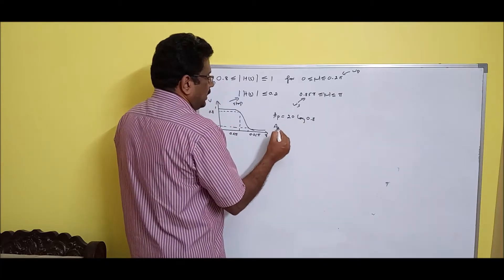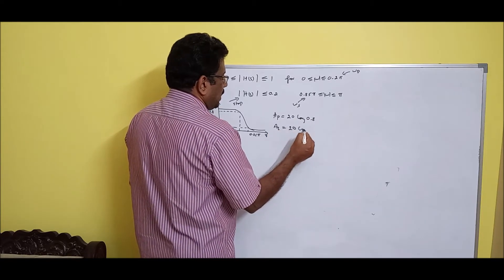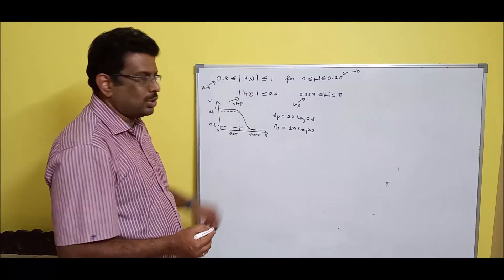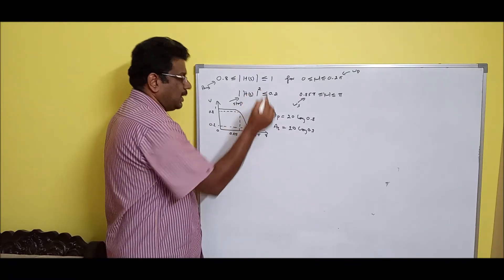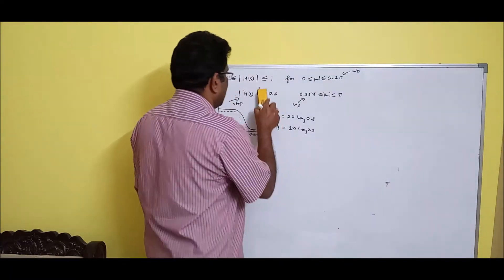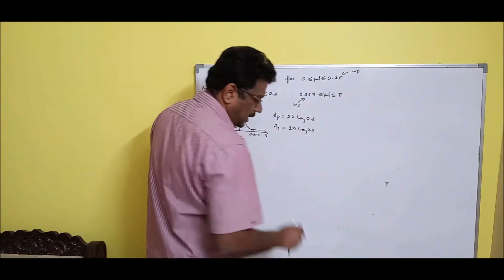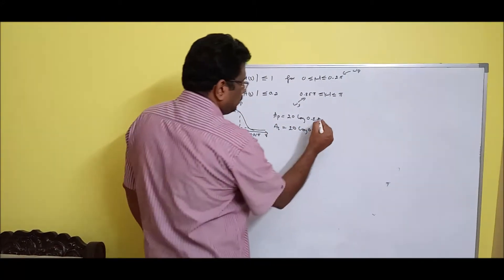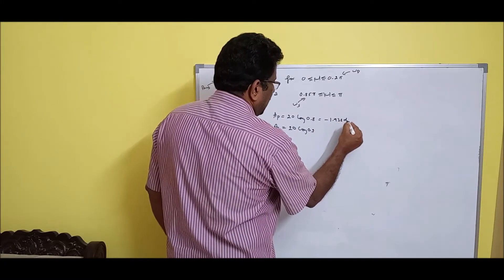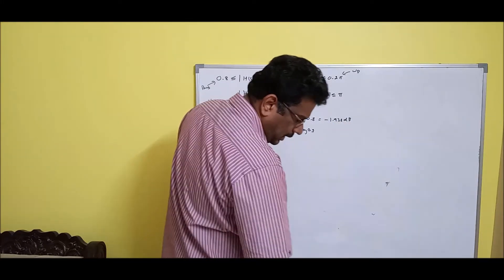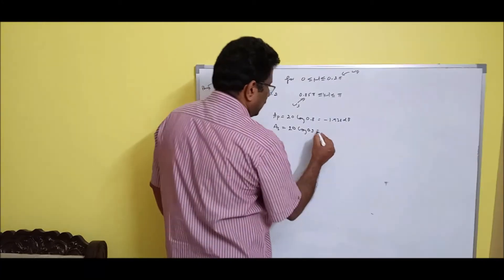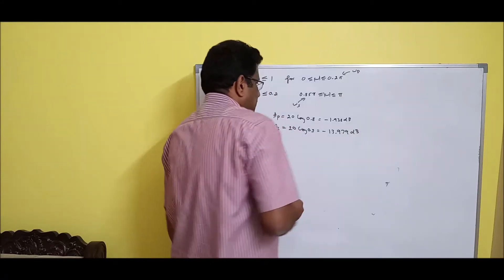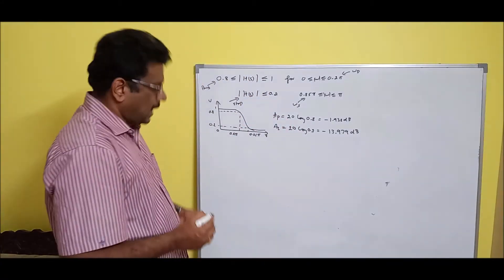Now compute ap and as. ap = 20 log(0.8) = -1.938 dB. as = 20 log(0.2) = -13.979 dB. Since the specs give magnitude (not power), we use 20 log. Be careful with your calculator.